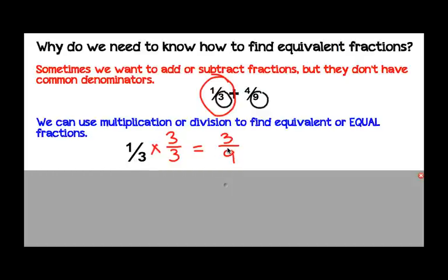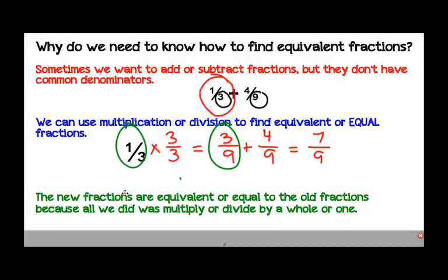One-third and three-ninths are equivalent fractions. They have the same value, they just look different. So now we could add 3-ninths to the 4-ninths. The new fraction that we made is equivalent or equal to the old fraction because all that we did was multiply by 1 or a whole. 3 thirds is the same as 1 because 3 out of 3 is a whole. So multiplying one-third by three-thirds is essentially multiplying one-third by a whole or one, which then gives us the new fraction of three-ninths.